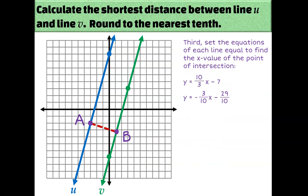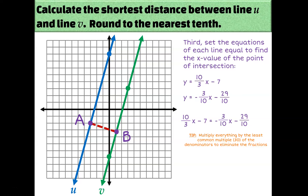So now the question is: where do those two lines intersect? Where does line AB intersect line V? Since they both equal Y, I can set the rest equal to each other: (10/3)X − 7 = (−3/10)X − 29/10. That's a bit messy with fractions, so I'm going to get rid of them by multiplying everything by the least common multiple of the denominators. The LCM of 3 and 10 is 30, so multiplying through by 30 gives: 100X − 210 = −9X − 87.